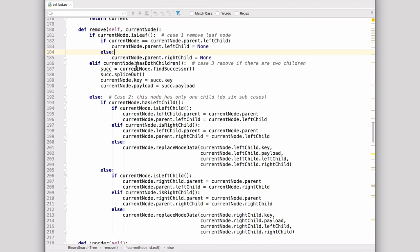And then we have the code we just covered which is case three where you have two children. And we rely a lot on find successor and splice out to do most of the work. And so that's it.